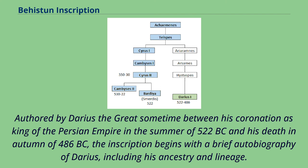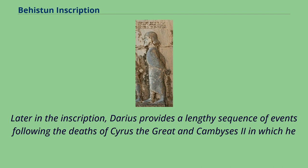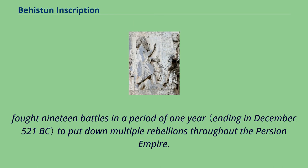Authored by Darius the Great sometime between his coronation as king of the Persian Empire in the summer of 522 BC and his death in autumn of 486 BC, the inscription begins with a brief autobiography of Darius, including his ancestry and lineage. Later, Darius provides a lengthy sequence of events following the deaths of Cyrus the Great and Cambyses II, in which he fought 19 battles in a period of one year to put down multiple rebellions throughout the Persian Empire.